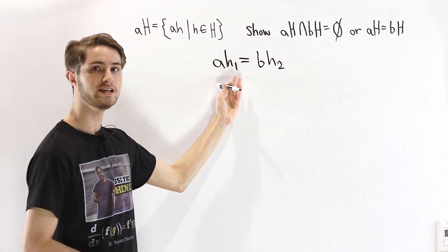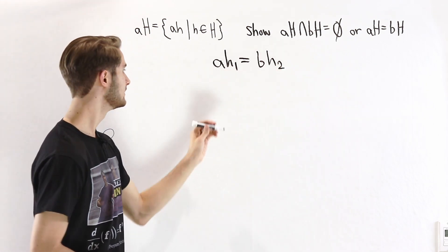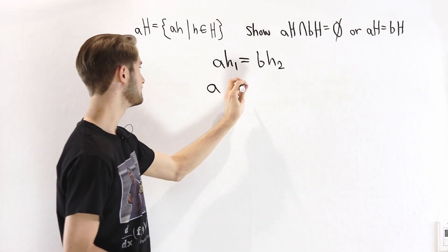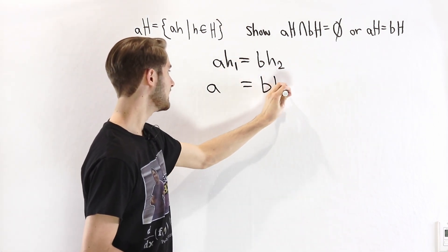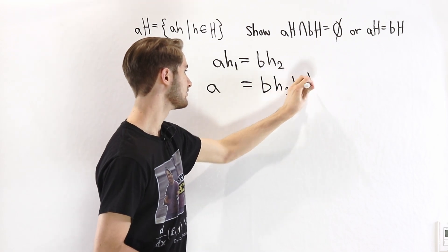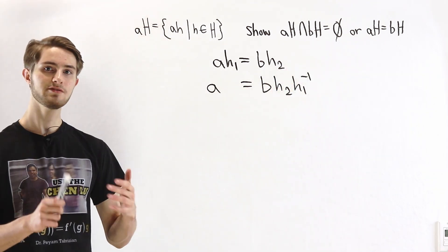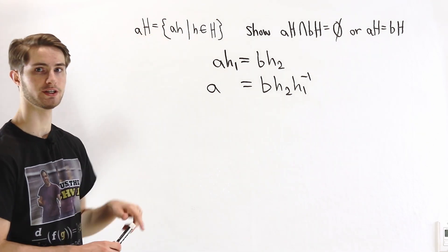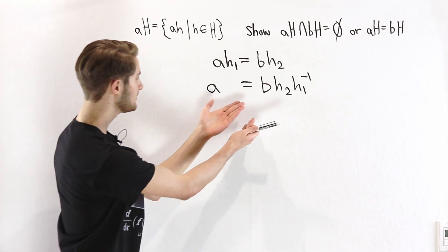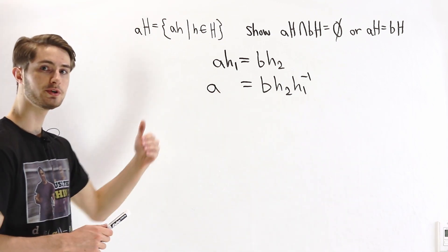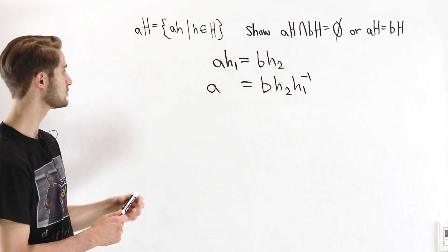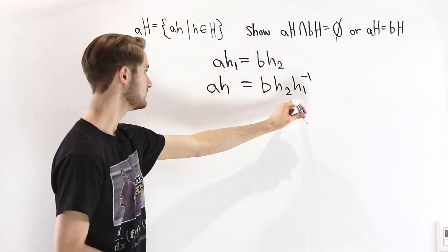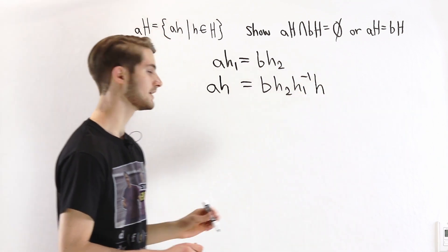If we start from here, we can multiply by H1 inverse on the right side, and we'll get a times H1H1 inverse, which just becomes the identity. Over here we'll have bH2H1 inverse. Now remember that every element in the coset aH can be written as a times h for some h in the subgroup. So if we have this equation, what happens if we right multiply some arbitrary element h? We'll get a times h equals bH2H1 inverse times h.